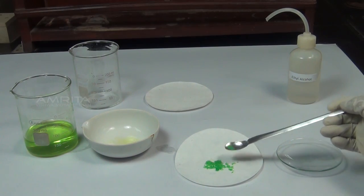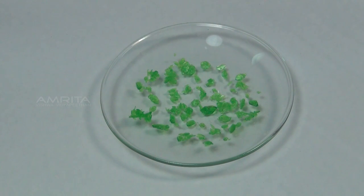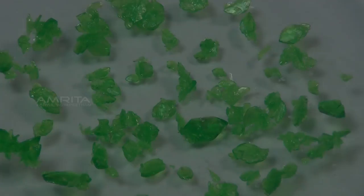Now transfer the crystals into a watch glass. The crystals of pure potassium trioxalatoferrate-3 are emerald green in colour and are octahedral in shape.